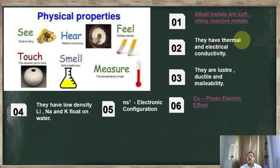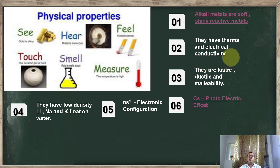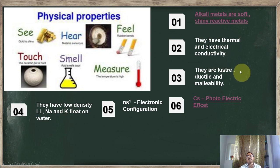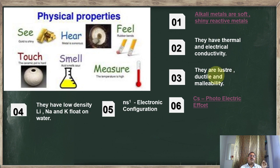These metals are very reactive — we will also see their reactions. They are thermally and electrically conductive; being metals, they conduct both electrical current and heat. They also possess lustre, ductility, and malleability: they can be pressed into sheets (malleability) and drawn into wire (ductility), and lustre means they have a shiny appearance.